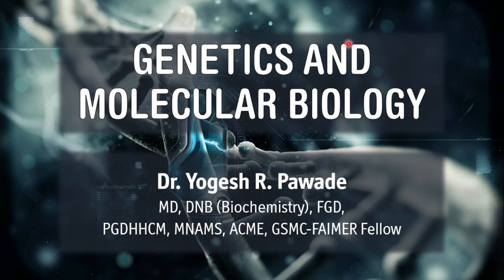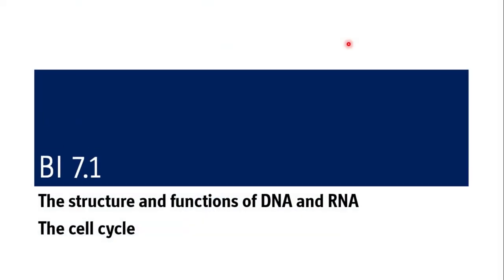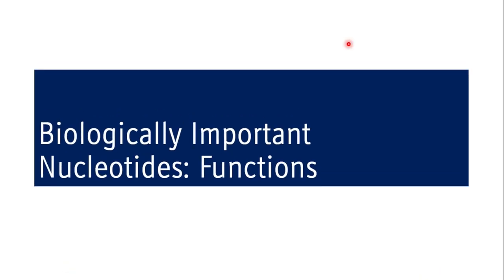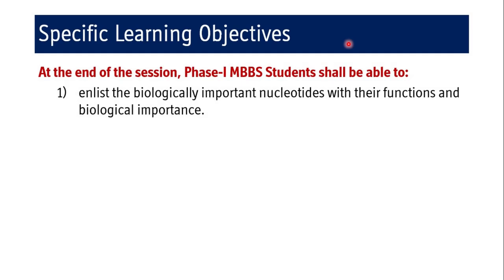In the previous lecture we covered the structure of nucleotides. In this particular lecture we will deal with competency 7.1, that is the structure and functions of DNA, RNA, and the cell cycle. In this session we will cover biologically important nucleotides, their functions and clinical significance. At the end of the session, Phase 1 MBBS students shall be able to enlist the biologically important nucleotides with their functions and biological importance.